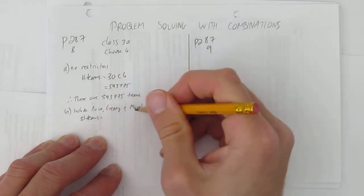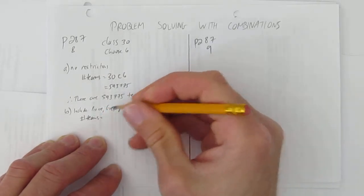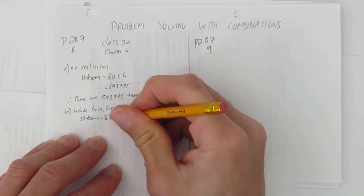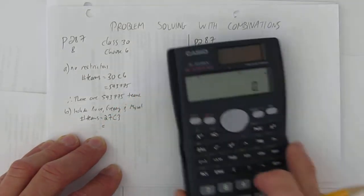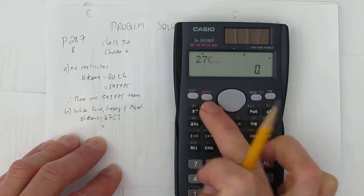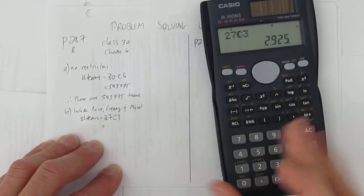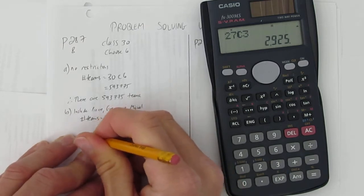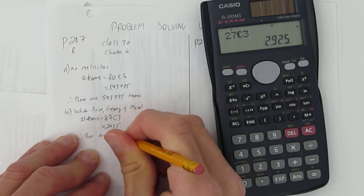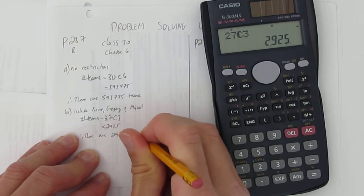That is, we take these three students, we already put them on the team. We now have 27 students left to choose from and we only have to choose three. So we go to our trusty calculator again and say, what's 27 choose 3? And we're down to a lot less possibilities. In this case, there are 2,925 teams possible.